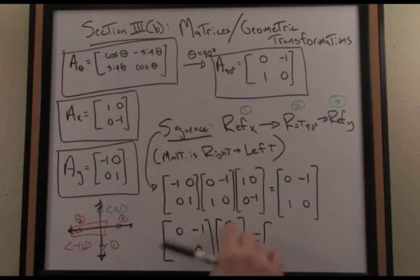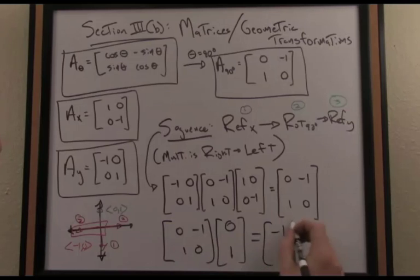When I take the dot product, then I get 0, negative 1 dotted here is negative 1. 1, 0 dotted with this vector is going to be 0. And sure enough, as we've seen here,